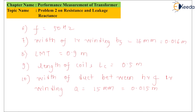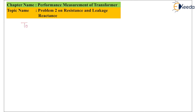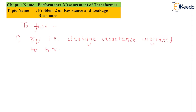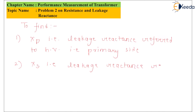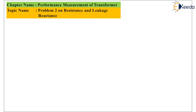This is all the given data from the problem. Now let us see what we have to find. First, we have to find XP, which is the leakage reactance referred to the HV winding, that is the primary side. Then we have to find XS, which is the leakage reactance referred to the secondary side.